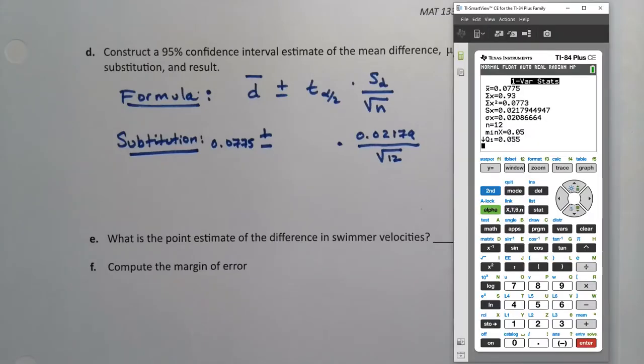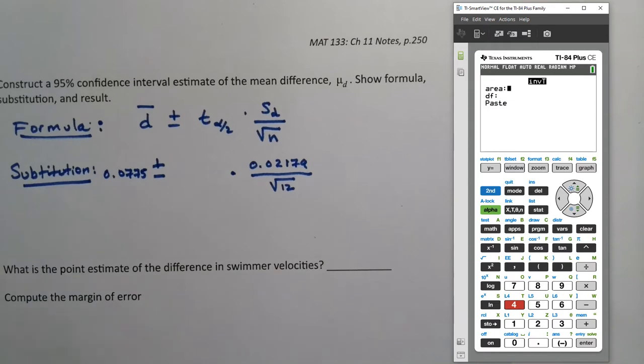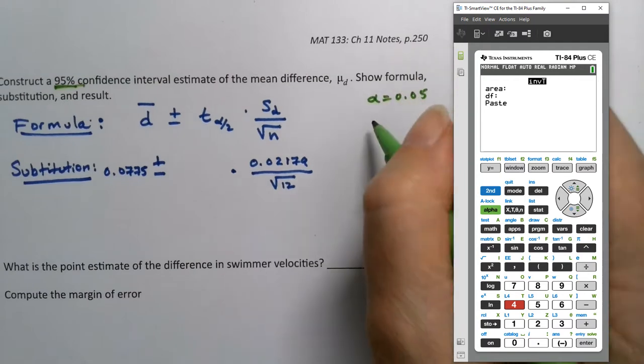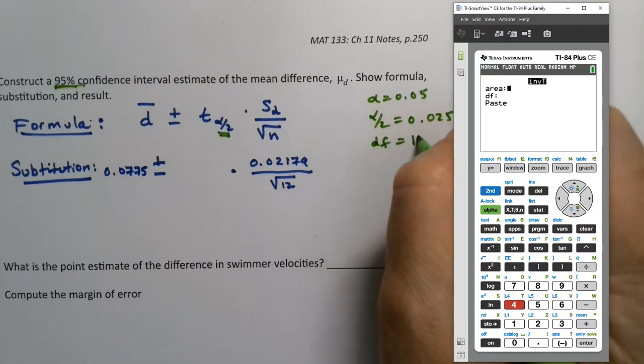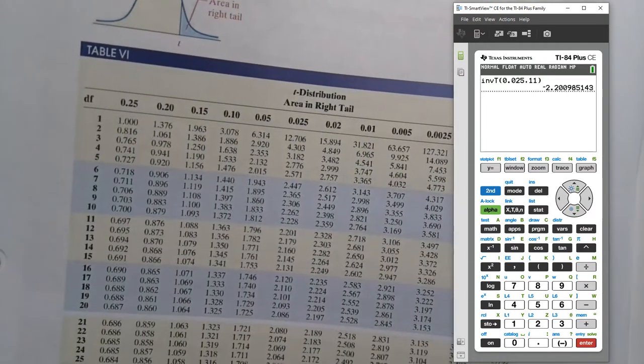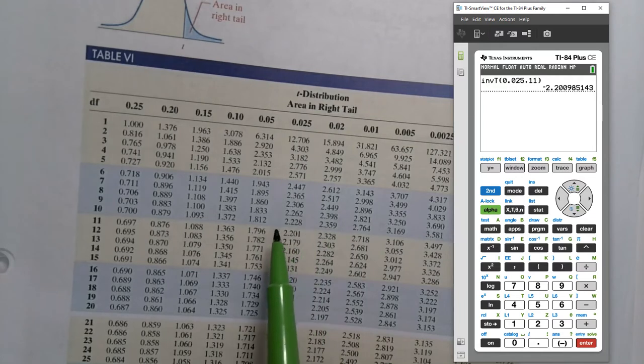In the calculator, you can get that from second distribution, inverse T, and you have to do the tail area, alpha over 2. Since your C level is 0.95, alpha is 0.05, so alpha over 2 is 0.025. My degrees of freedom is 11. I could also grab it out of my T table, look at the 0.025 column and go down to 11 for my degrees of freedom, and it's 2.201.